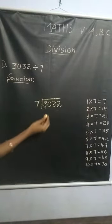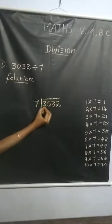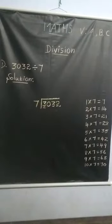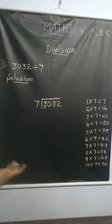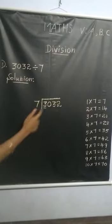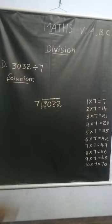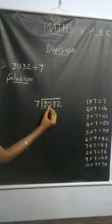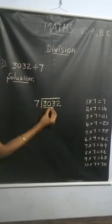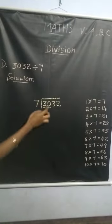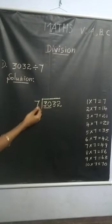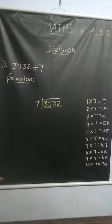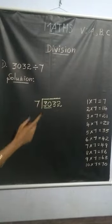First we compare the first number, 3, and 7. 3 is smaller than 7, so we cannot divide 3 by 7. So we compare the first two numbers: 30 and 7. 30 is greater than 7, so we can divide 30 by 7.